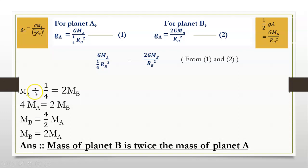Division sign converts into multiplication sign. We write the reciprocal. So we get 4 into MA is equal to 2 into MB. Therefore, MB is equal to 4 upon 2 into MA. That is, MB is equal to 2 into MA. So the answer is mass of planet B is twice the mass of planet A.